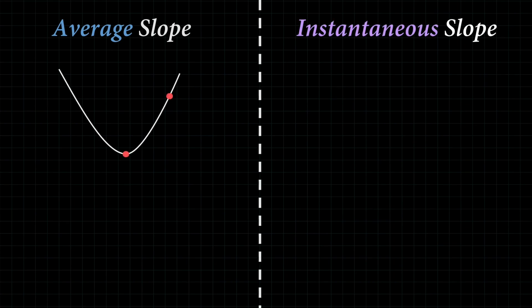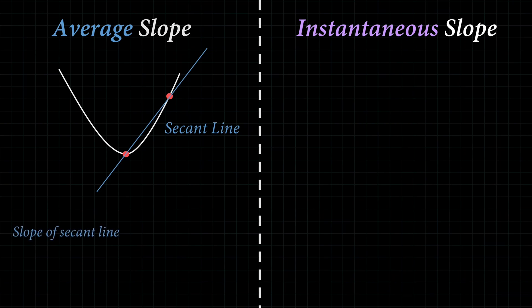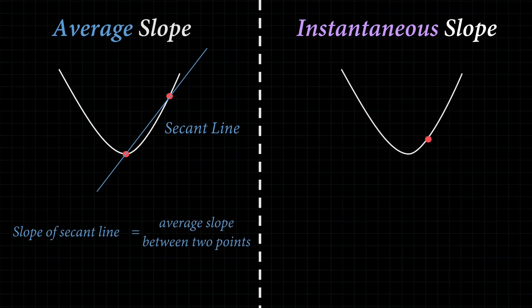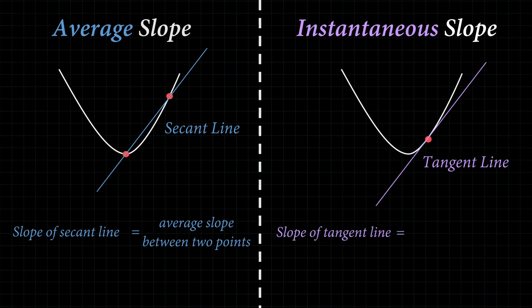For the average slope, we're looking to find the slope of a line that intersects two points on the graph, also known as the secant line, and the slope of that secant line will measure the average slope between the two points. On the other hand, for the instantaneous slope, we're trying to measure the slope of a line that touches only that point on a graph without intersecting the graph, also known as the tangent line. The slope of the tangent line will give us the instantaneous slope at that particular point on the graph.